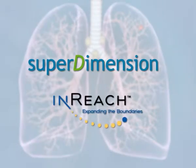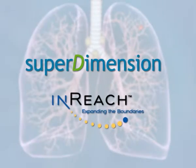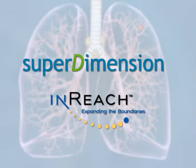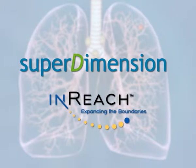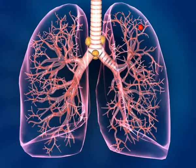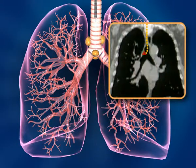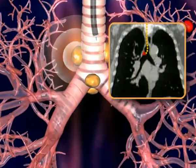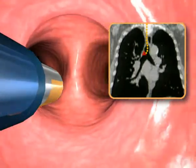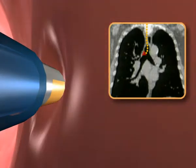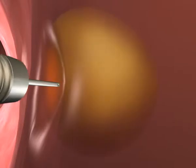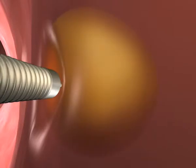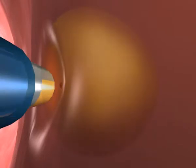The Superdimension iReach system provides electromagnetic navigation and access to multiple locations in the lung and mediastinum. To facilitate transbronchial needle aspiration of mediastinal lymph nodes, the physician positions the tip of the steerable navigation catheter or locatable guide via the CT images and creates a small dent at the lymph node entry point. The cytology or histology needle can then be inserted into the lymph node and sample collection completed.